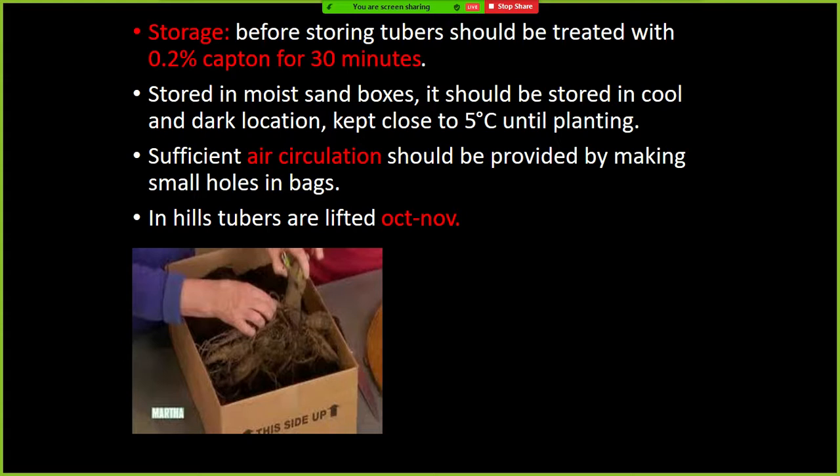The Dahlia ray florets are in many colors, but the disc florets are generally yellow in color — this is an important point. Some important cultural practices like stopping, thinning, hoeing, and disbudding are done in Dahlia. In each branch, there are mainly three buds, of which only one strong bud is retained and others are removed at the peanut stage — this is the disbudding or shooting operation.